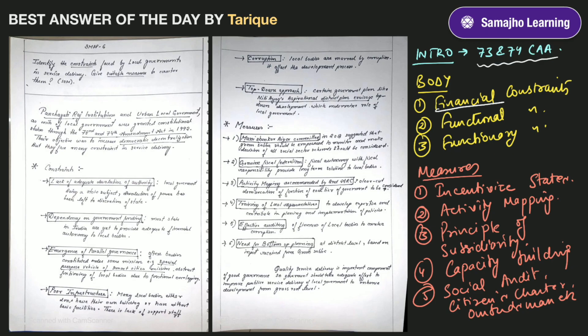The state finance commission, their reports, they cannot be placed regularly in the legislative assembly or properly considered. Then you can talk about functional constraints also.